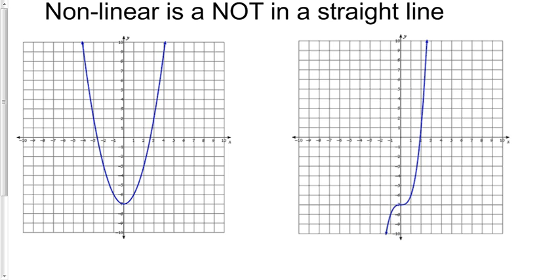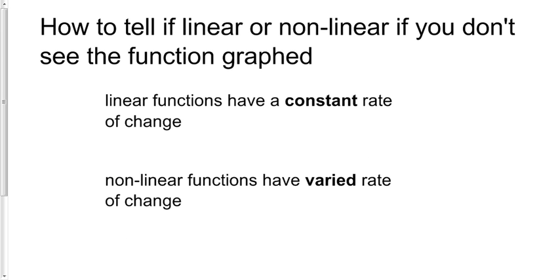That's easy when you see it graphed, but when you're looking at something without it being graphed - let's just say an input-output table, a mapping diagram, perhaps just the equation - then we've got an issue here. Linear functions have a constant rate of change, and we'll talk about what that means. And nonlinear functions have a varied rate of change.